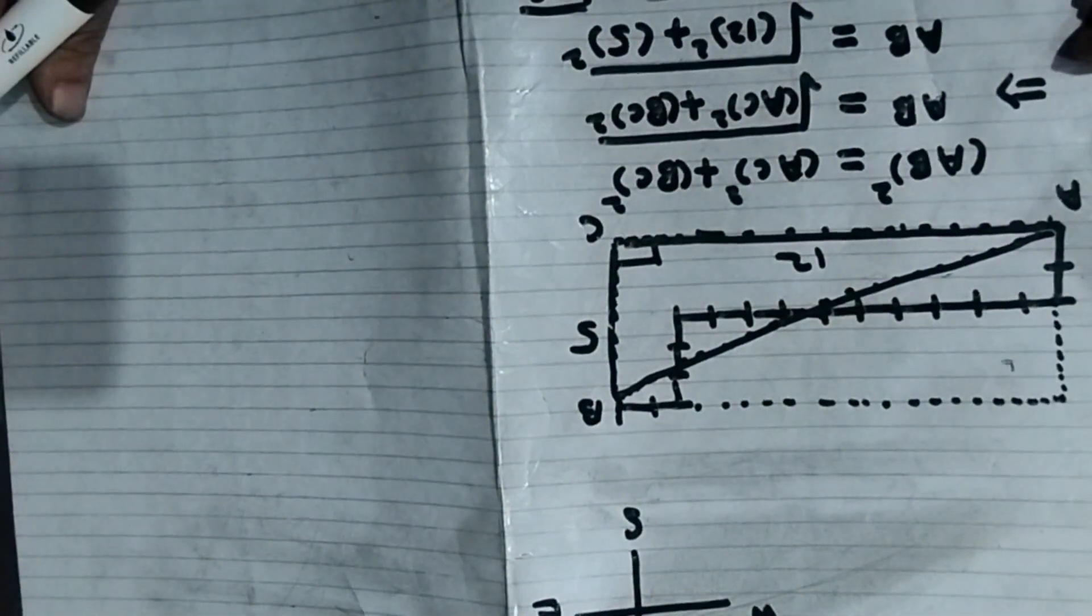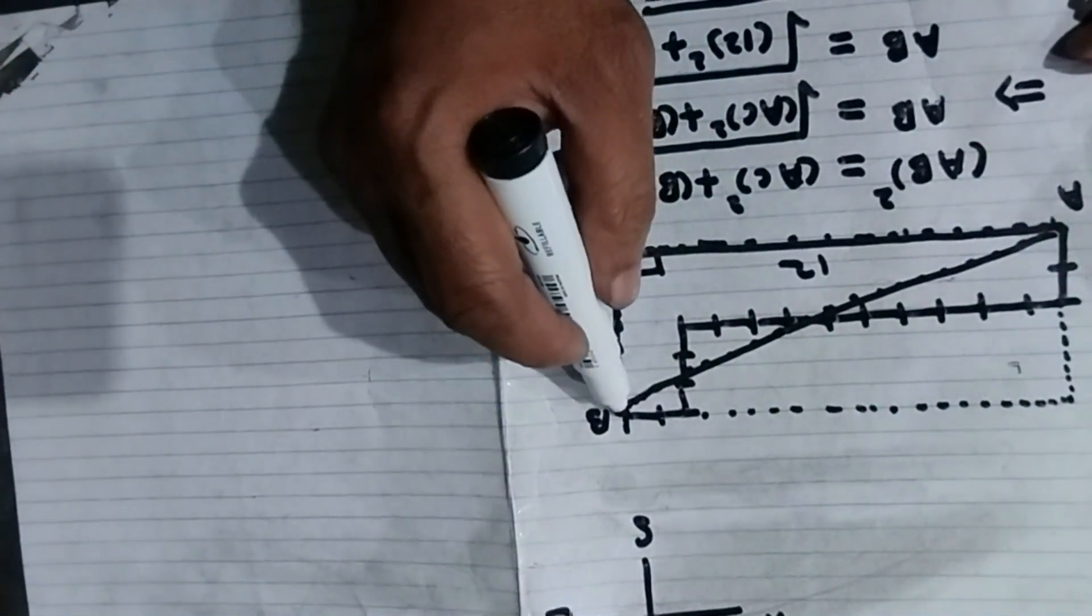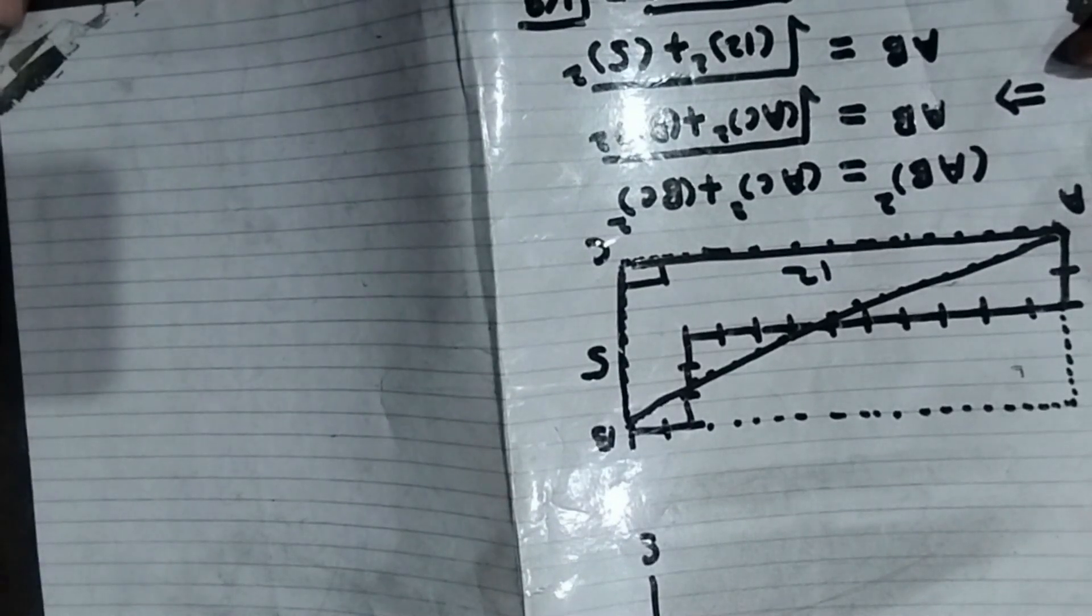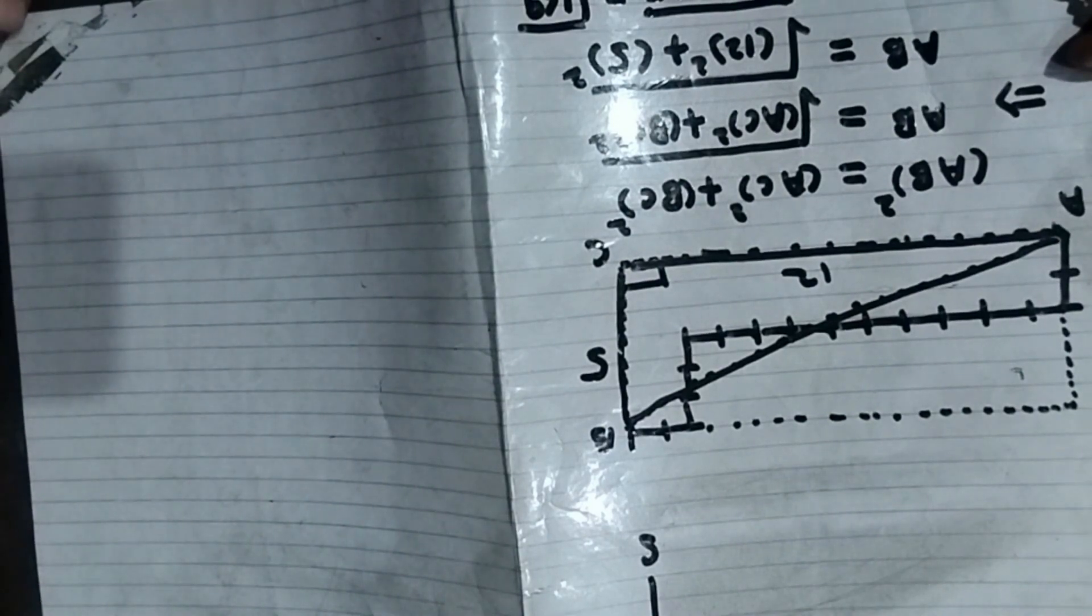So this is the answer. Man from his initial point to his final point is about 13 kilometers away. Hope that you might have understood this problem and let's see in the next video. Please subscribe to our channel. Thank you very much.